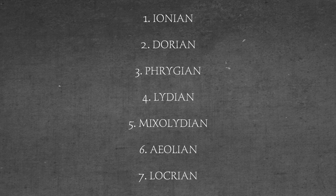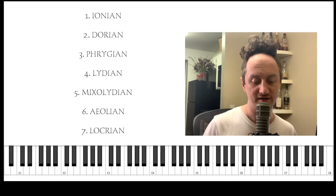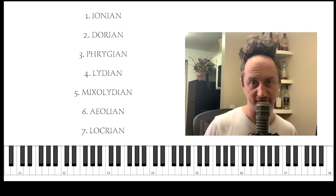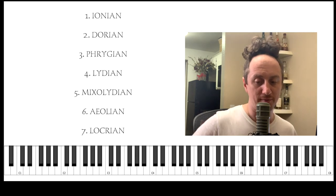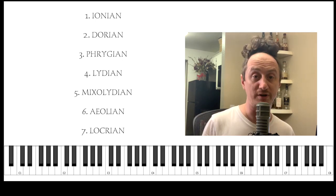So one important thing to remember about these scales is that they show up in a particular order. And if you know the order of the modes, then you can pretty much arrive at any mode from any key. I'll explain. If we look at the key of C, where there are no sharps or flats, we will see how the modes or chord scales show up in order. So here we go.